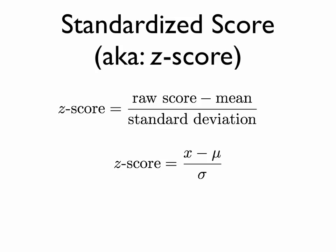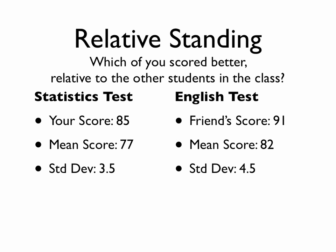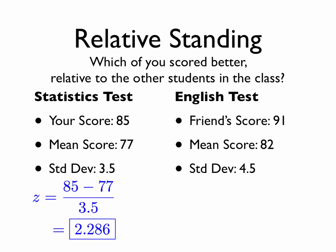This is a formula that's going to come up often throughout the entire remainder of this course. So now we can answer the question in a more compact way: you scored approximately 2.3 standard deviations above the mean, whereas your friend scored exactly 2 standard deviations above the mean, which means you did better relative to the other students in your class than your friend did.